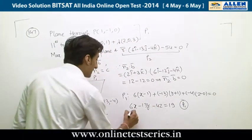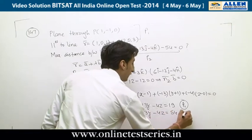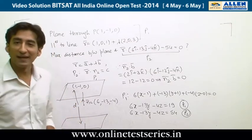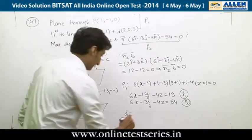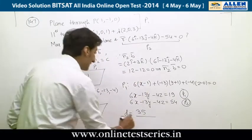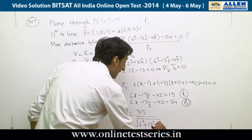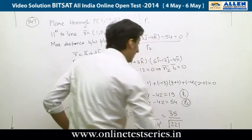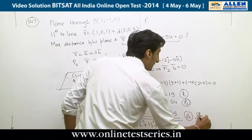Plane P2 is 6x - 13y - 4z = 54. The maximum distance D between the two planes is D = |54 - 19| / √(6² + 13² + 4²) = 35 / √221. This is the answer, so option B is correct.